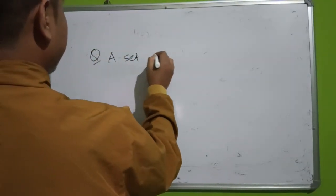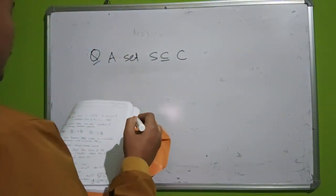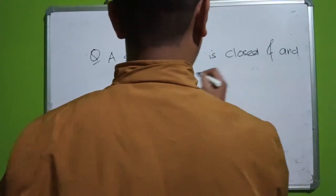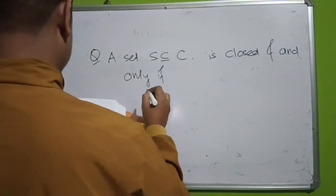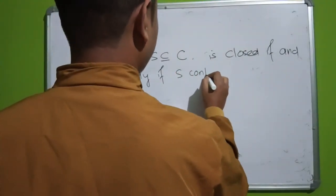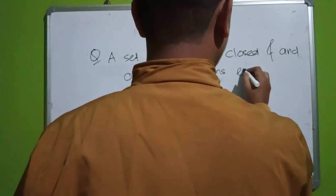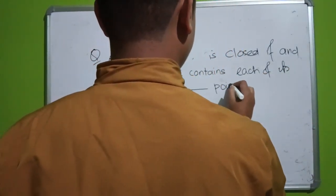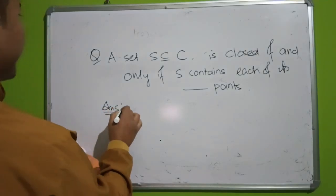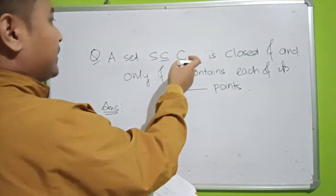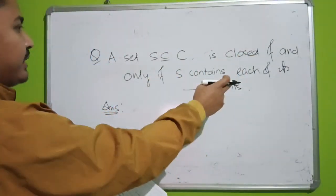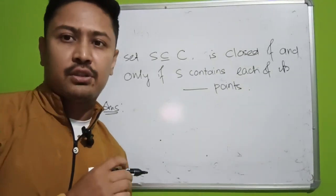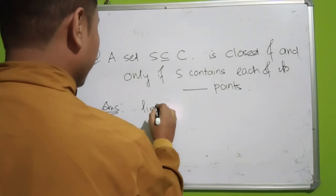Question one: define a closed set. A set S, which is a subset of the set of all complex numbers denoted by ℂ, is closed if and only if S contains each of its limit points. This is the definition of a closed set — it must contain each of its limit points.